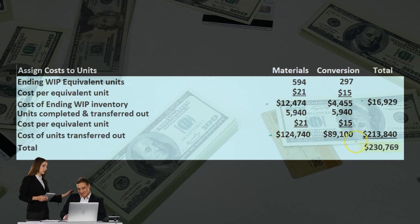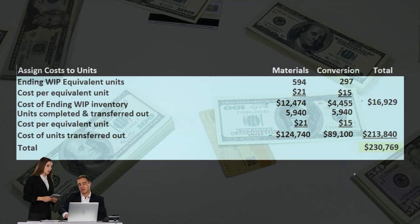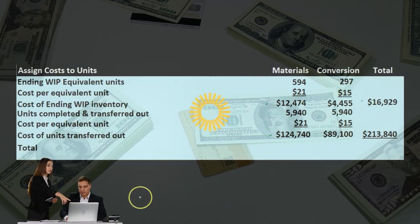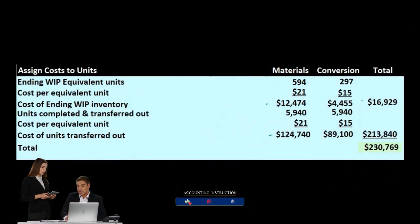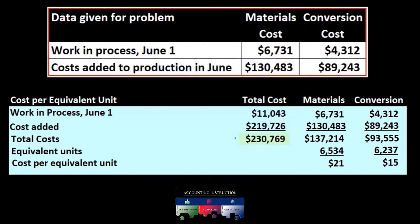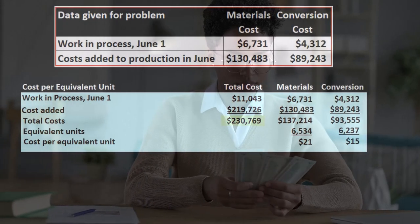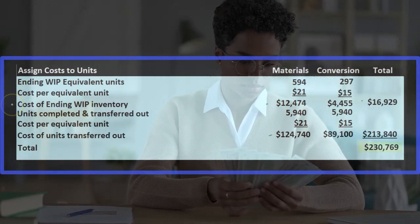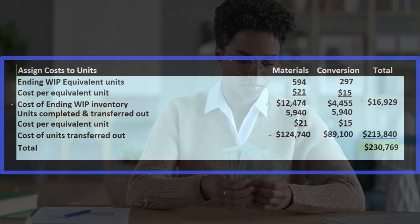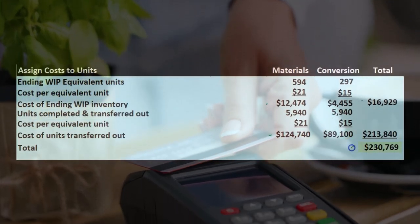Adding the two segments together — $16,929 for ending work in process and $213,840 for units transferred out — gives us $237,769, which ties out to our total costs. We used the cost per equivalent unit to apply the total costs between ending work in process and units completed and transferred out. This check figure confirms everything balances to total costs.